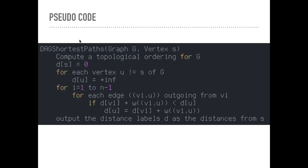Here's the pseudocode. DAG shortest path accepts a graph G and a vertex s. The first thing we do is compute a topological ordering for G. This is a non-trivial line, and we have a whole video dedicated to this called Topological Sort. Then we set the distance to the start vertex equal to 0 and to every other vertex to positive infinity, just like we talked about.